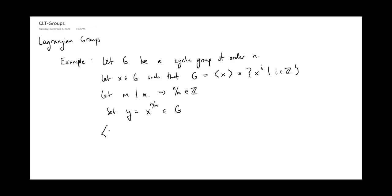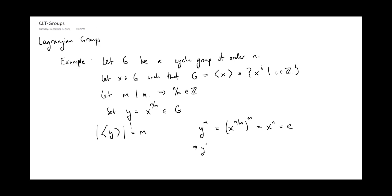Now let's look at the group generated by y — all the powers of y. We already know that the order of x is n, which means if I raise x to anything smaller than n, I won't get the identity element. I claim the order of y has to equal m, which means the order of this group will equal m. If we take y raised to the m-th power, that's x to the n over m raised to the m-th power. The exponents multiply, giving x to the n. Since G has order n, x to the n is the identity element. And if I took anything smaller than m, I'd be raising x to a power smaller than n and can't get the identity. So this implies y has order m.